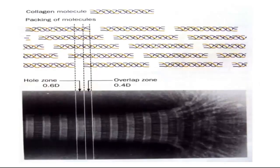The quarter-staggered alignment produces alternating zones: an overlapping zone and a hole zone where no triple helix is present. When stained, this arrangement produces the characteristic alternating banding pattern visible in fibrils.